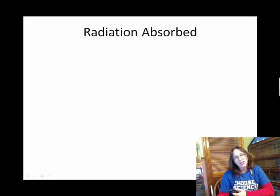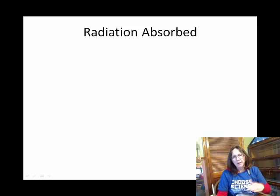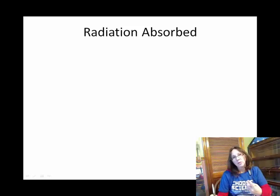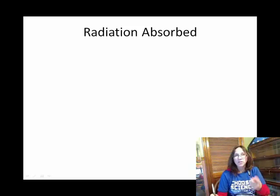Recently in this chapter we said that energy from the sun — insolation from the sun — will either be within the Earth's atmosphere, and if it makes it to the geosphere, that energy will either be absorbed, transmitted, scattered, or reflected depending upon the nature of the particle and the wavelength of the energy.